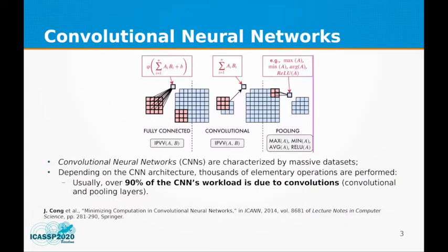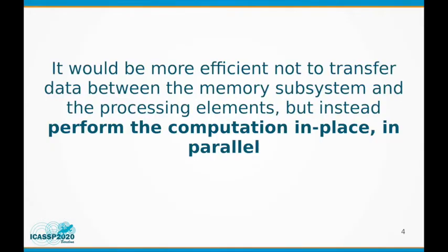Let's look at the particular example of convolutional neural networks. CNNs have massive datasets. Plus, they require performing thousands of operations, of which 90% are convolutions. Convolutions are characterized by irregular memory access patterns. Plus, since the datasets are massive, data has to be transferred more than once to the processing cores. Therefore, it would be much more efficient not to transfer the data to the processing elements at all. Instead, we could perform the computation near where the data is actually stored. By doing so, we would not only take advantage of the proximity to the data, but we would also possibly enable massive parallelism allowed by the architecture of the memory device.